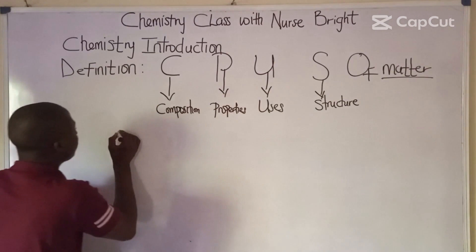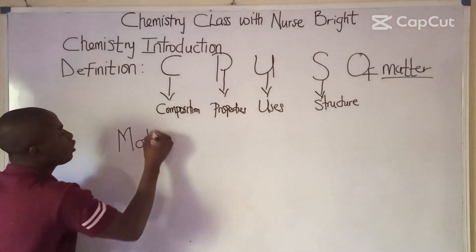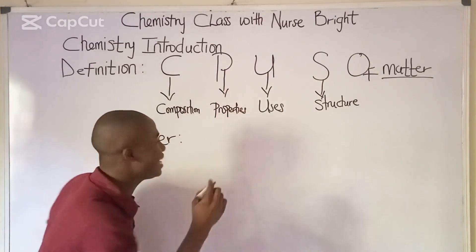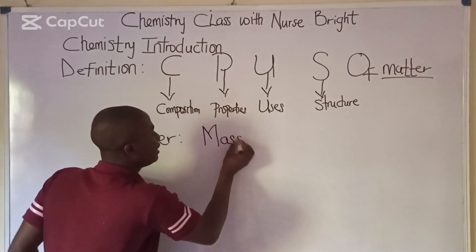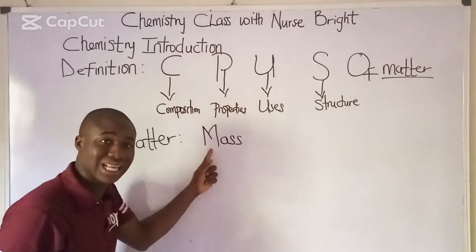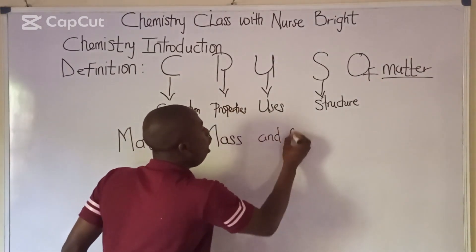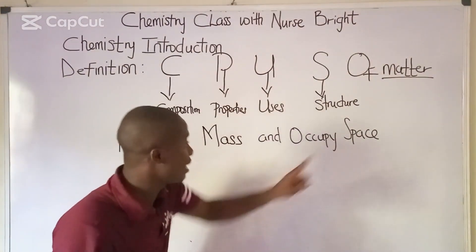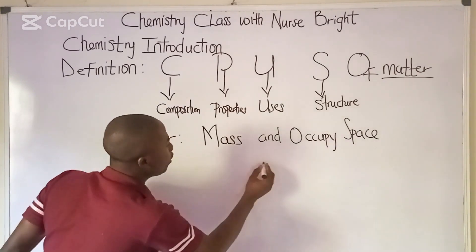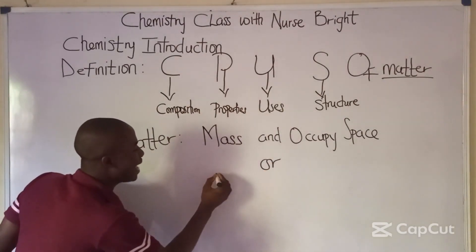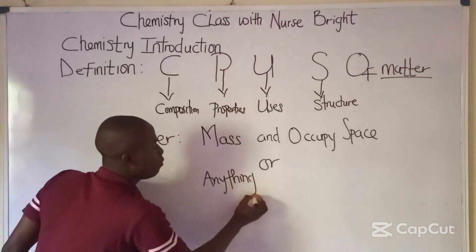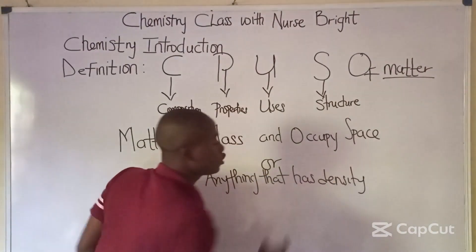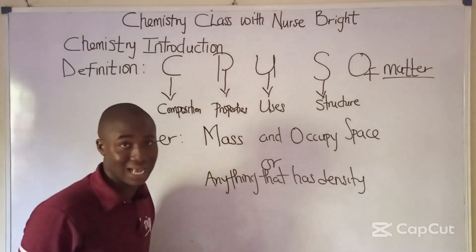The question we're going to ask ourselves is: what do we call matter? Matter is basically anything that has mass and occupies space. We can also say matter is anything that has density, since density relates mass and volume.